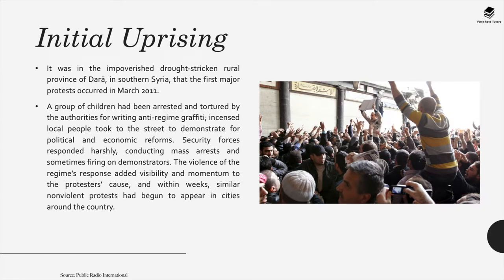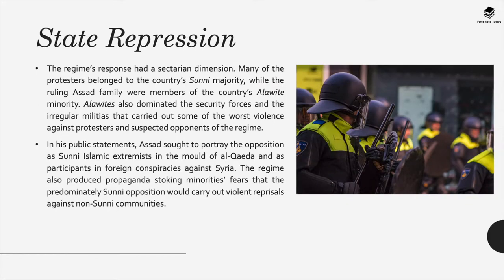Security forces responded harshly, conducting mass arrests and sometimes firing on demonstrators. The violence of the regime's response added visibility and momentum to the protesters' cause, and within weeks similar non-violent protests had begun to appear in cities around the country. However, the state responded in an extremely harsh way, and the regime's response had a sectarian dimension. Many of the protesters belonged to the country's Sunni majority, while the ruling Assad family were members of the country's Alawite minority.